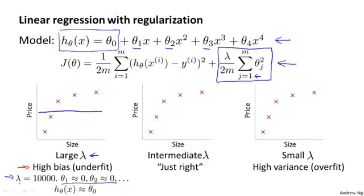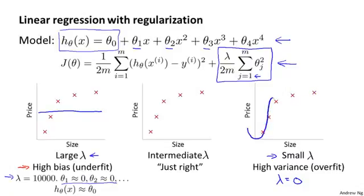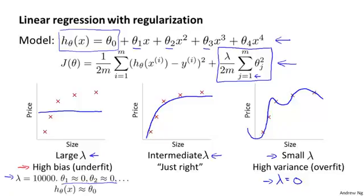The horizontal straight line is just not a very good model for this data set. At the other extreme, if we have a very small value of lambda — such as lambda equals 0 — given that we're fitting a high-order polynomial basically without regularization, we end up with our usual high-variance overfitting setting. It's only if we have some intermediate value of lambda that is neither too large nor too small that we end up with parameters theta that give us a reasonable fit to this data.